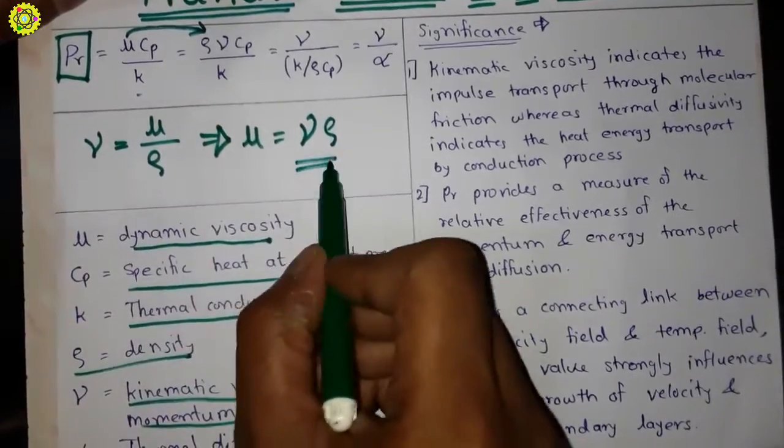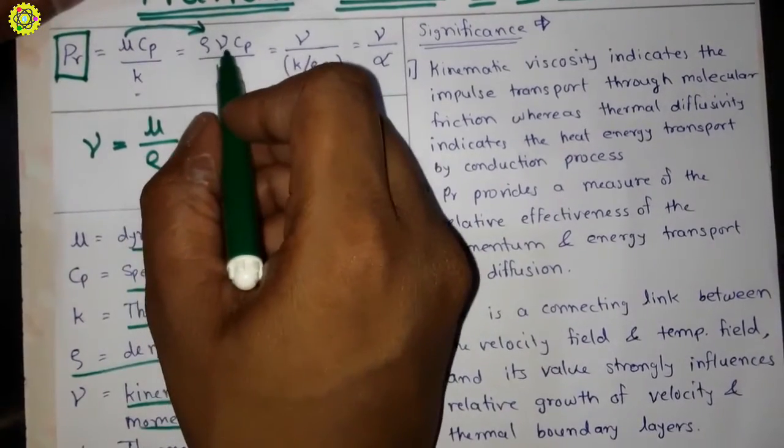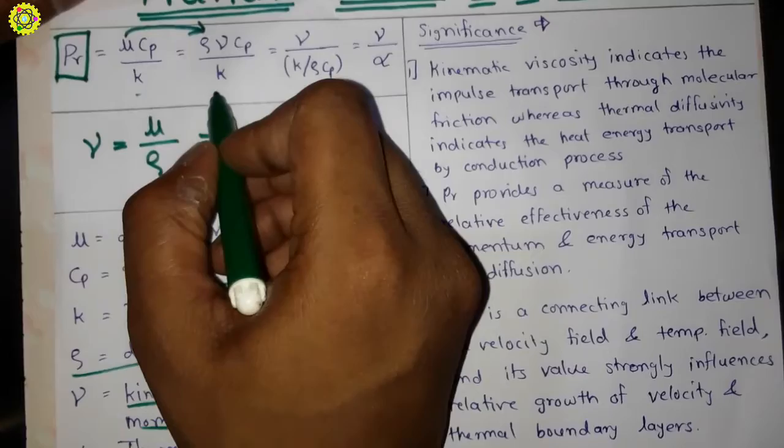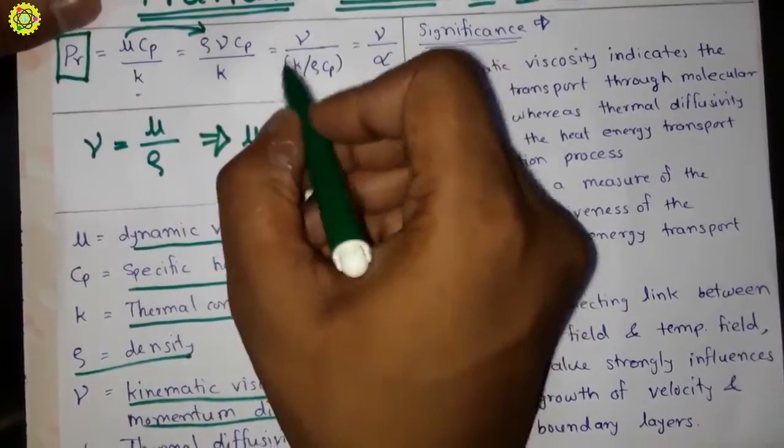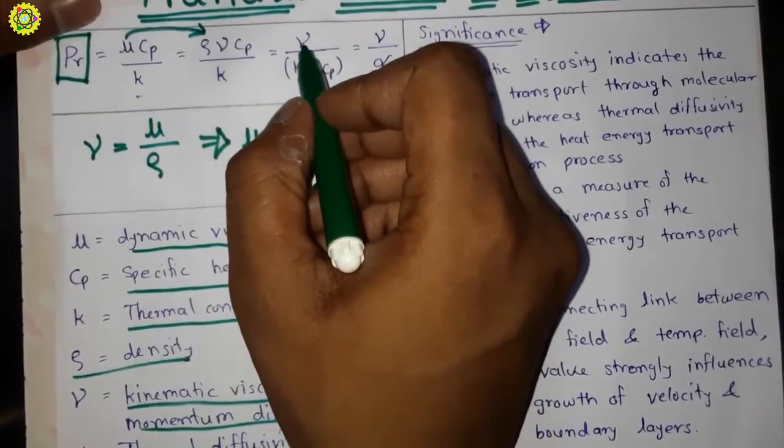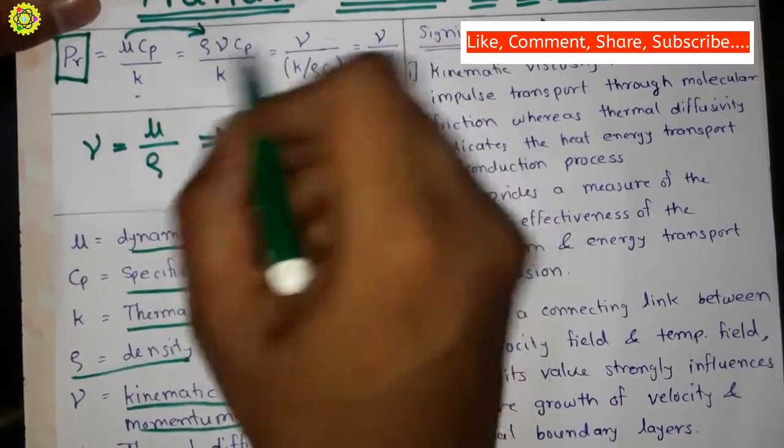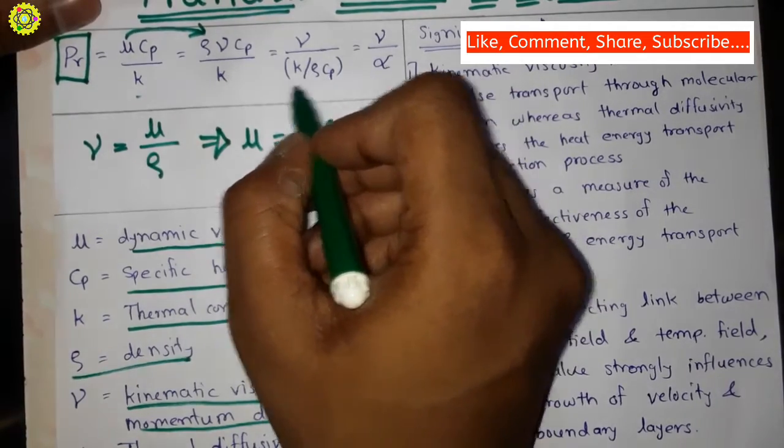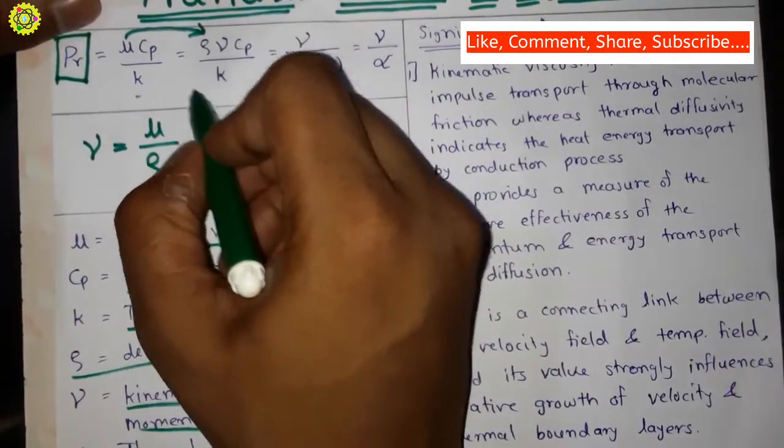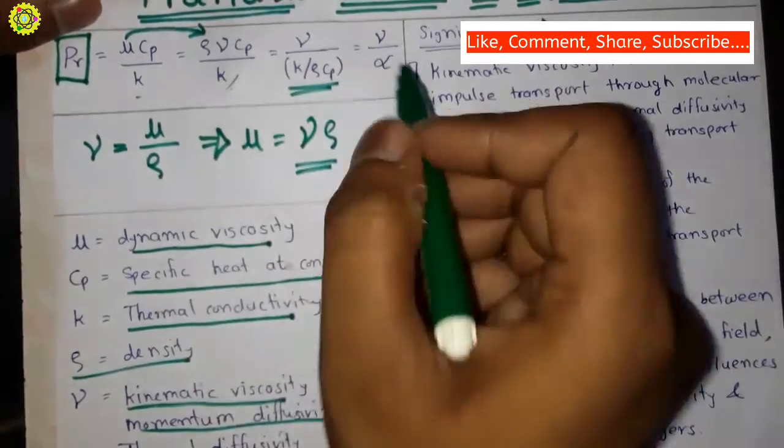So here rho*nu*CP upon K. Further we again simplify it as Prandtl number equals nu upon K upon rho*CP - this rho*CP goes down here. So here after this we will again simplify it...